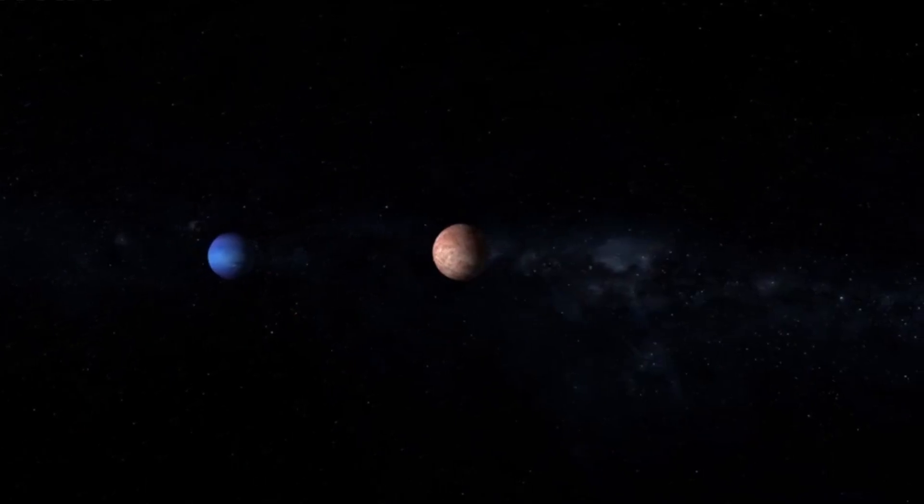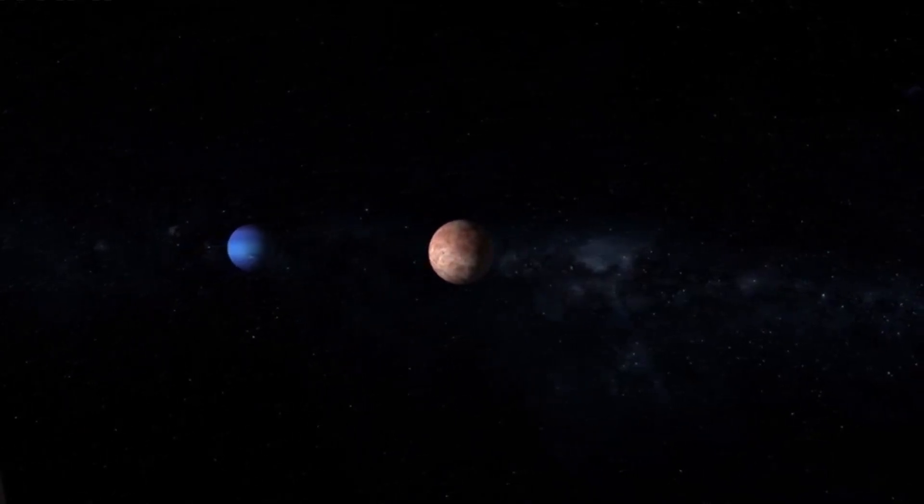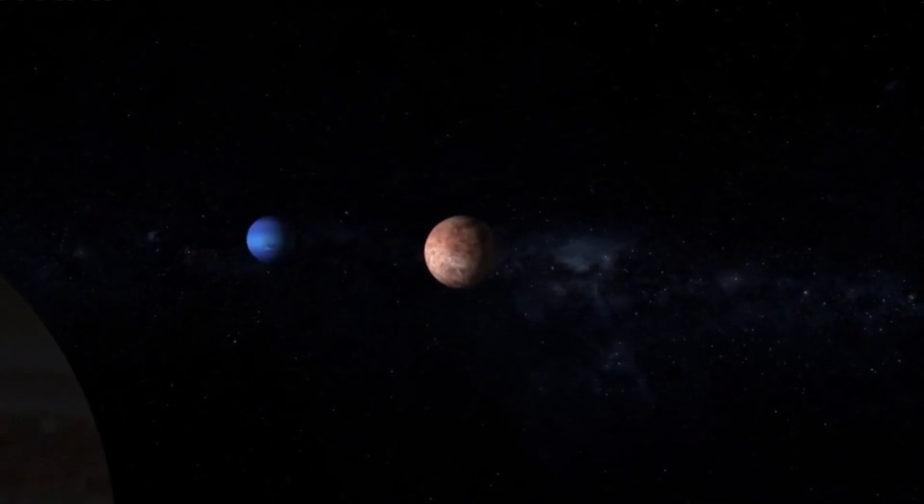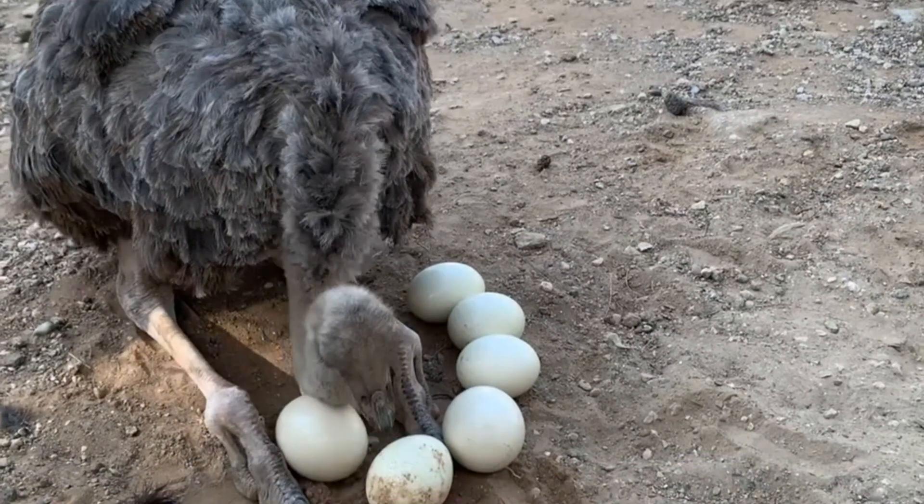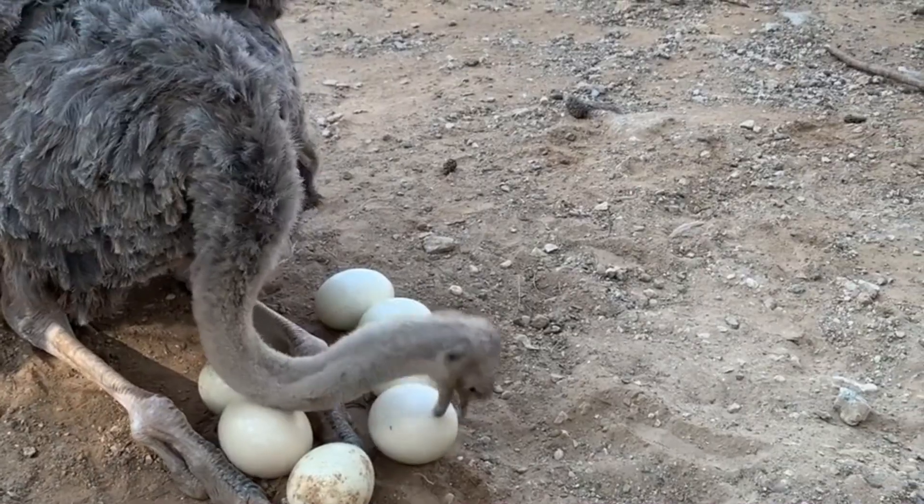This planet is enormous, and based on our current understanding, such a tiny star shouldn't be able to form a planet of that size. It's like finding an ostrich egg in a chicken coop.